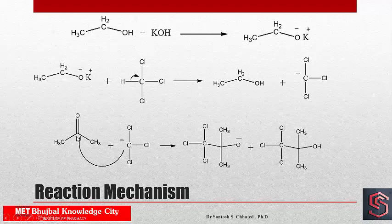In this process, the pi electrons migrate to oxygen, forming an unstable alkoxide intermediate. This later gets converted to an OH group after abstraction of an H⁺ ion. This is how ethanolic KOH solution, acetone, and chloroform react to form chlorbutanol.